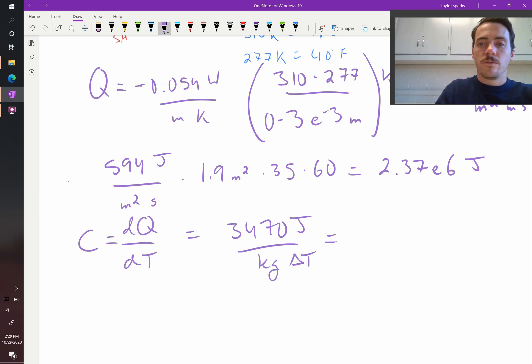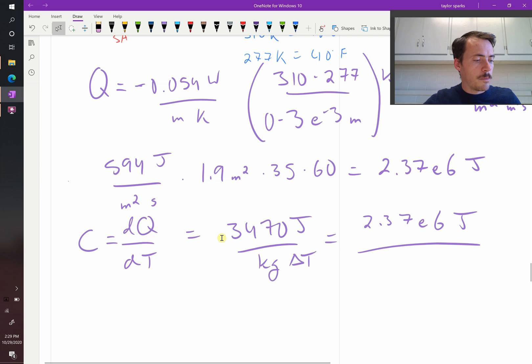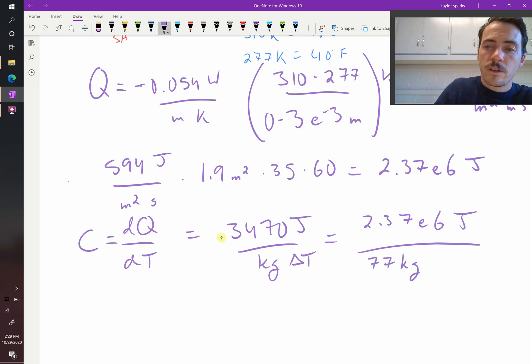So let's set that equal to the heat that we've lost, 2.37 e to the sixth joules. And then we need to figure out the mass of the person and how much temperature they've lost. So we've said that the person is 77 kilograms, then we can solve for our delta T.